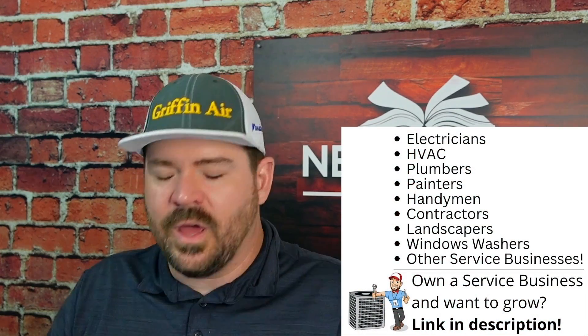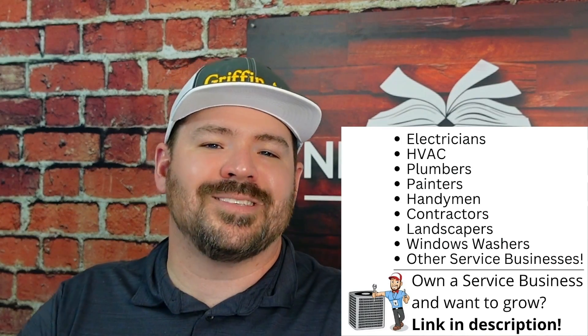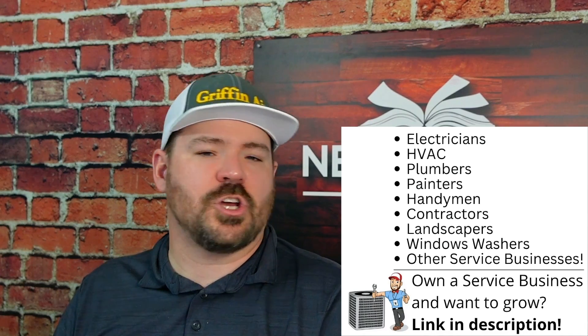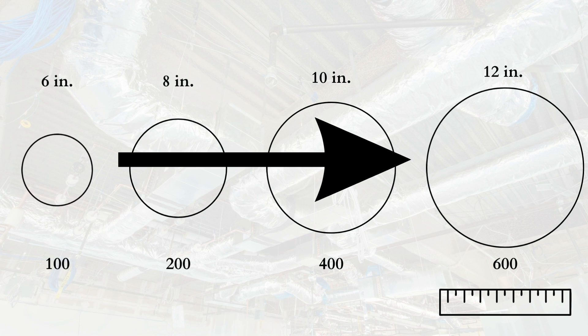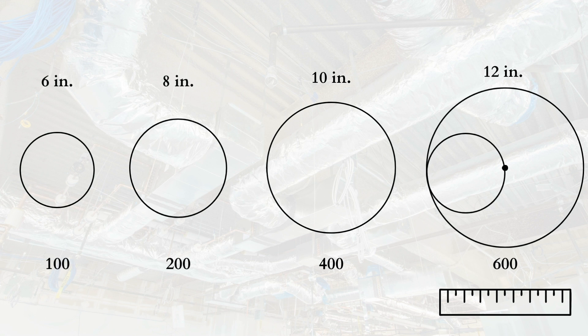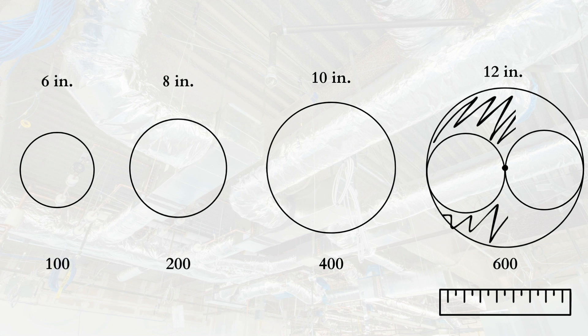Why is that? I mean we see it on the ductulator, but why? Why does going from a six to an eight double the CFMs, and why is doubling the diameter almost six times higher than the original? Here's an illustration: imagine a ruler showing twelve inches in diameter from one side to the other. If we take a six inch and fit it inside, there's the middle, and then another six inch on the other side — so two six inch pipes fit in there by diameter. But look at all the space that's not being used.